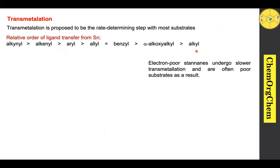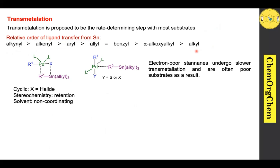In transmetalation, there are two types of mechanisms known: cyclic transmetalation and open transmetalation. In cyclic transmetalation, X means halide, and when your substrate undergoes cyclic transmetalation, the final product stereochemistry should be retention of stereochemistry. The solvent for this mechanism is mostly a non-coordinating solvent.